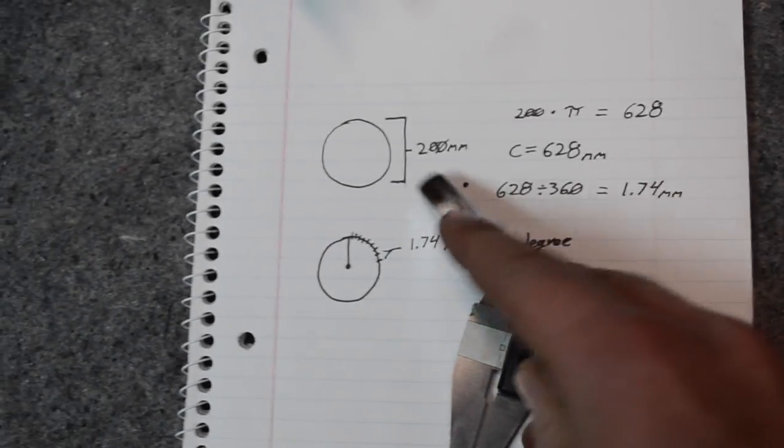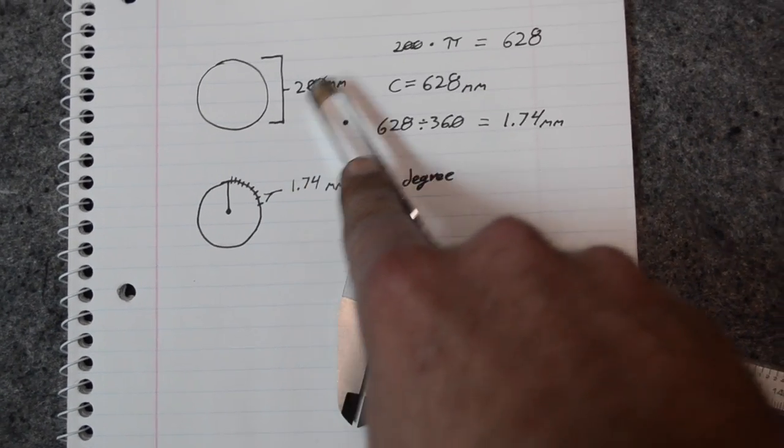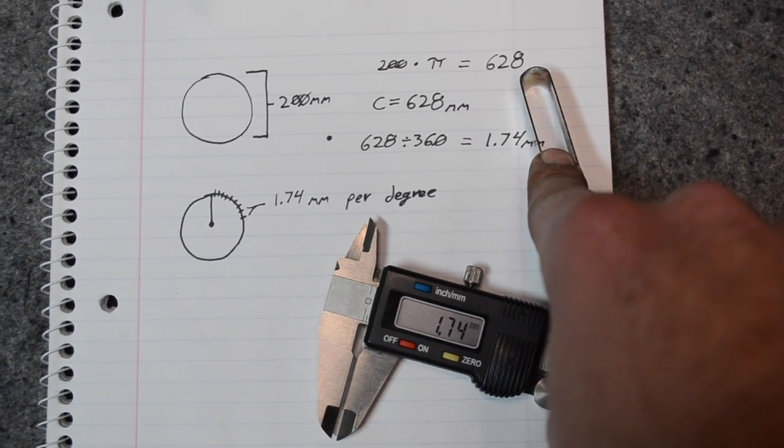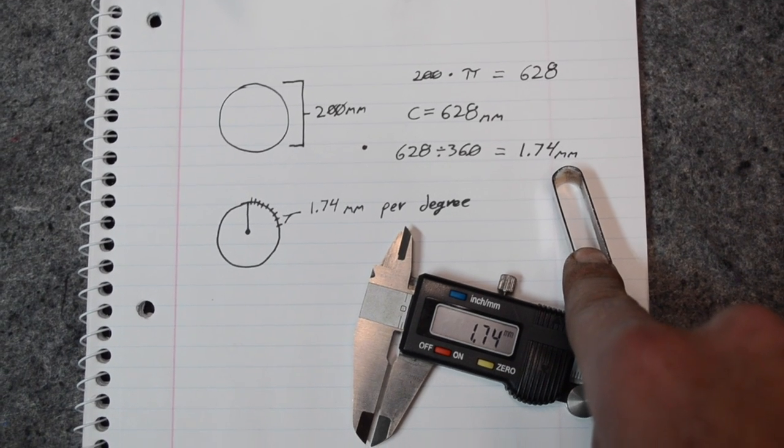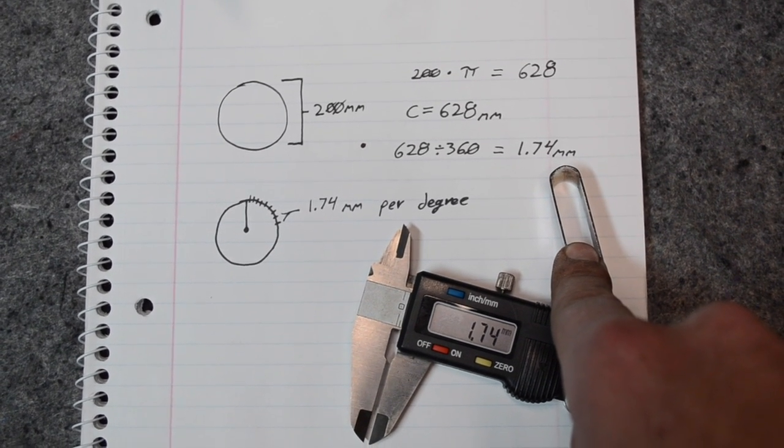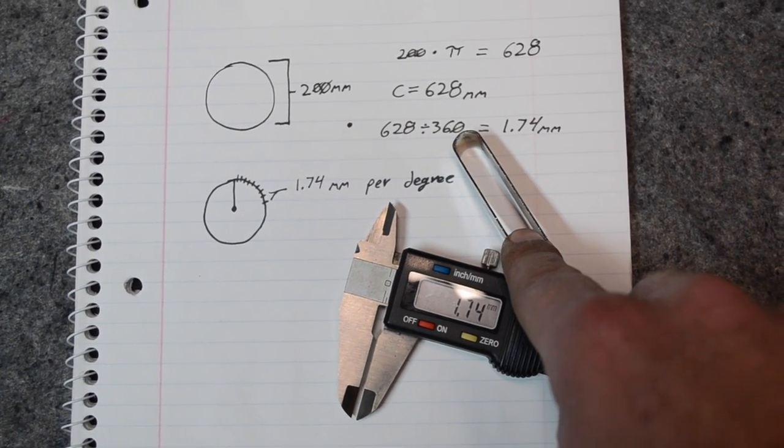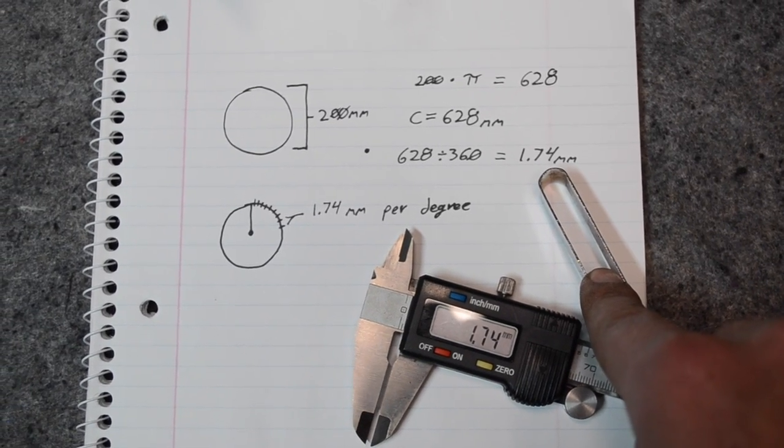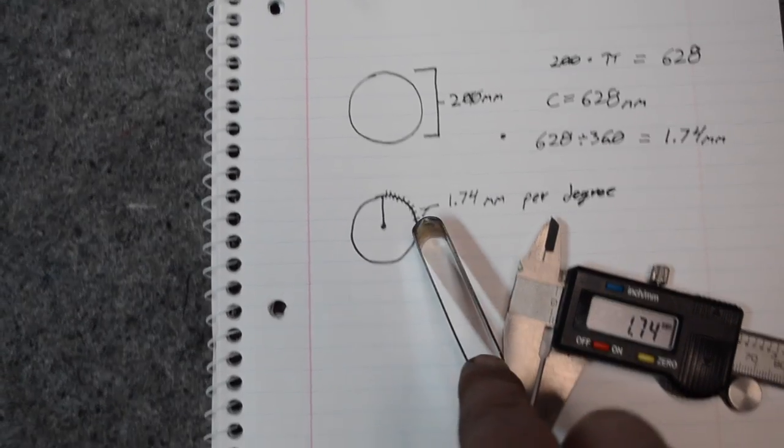Take 200, multiply that by pi, that gives you 628mm as a circumference. To get the distance per degree on the circumference of the flywheel, take 628mm divided by 360, that gives you 1.74mm per degree. As you can see here, that is obviously not 360 marks but you get the gist of it. On my digital dial caliper I marked that to 1.74mm.